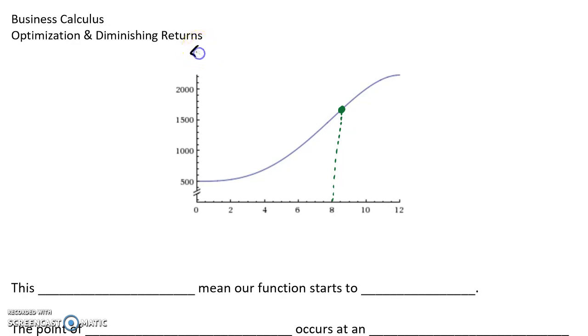If we were to calculate this by hand, what we would be looking for is to construct a sign chart for the second derivative of our function. At this point of diminishing returns, we would end up with a point where our second derivative is equal to zero, and we would see our second derivative change from positive values to negative values. So again, it doesn't mean that our function is changing to decreasing, it just means that our function is growing at a slower rate.